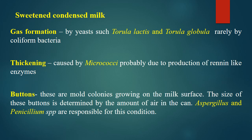Now we will see the spoilage of sweetened condensed milk. The first change that can happen here is gas formation by yeasts such as Torula lactis and Torula globula, and rarely by coliform bacteria. Another kind of change is thickening caused by Micrococci, probably due to production of renin-like enzymes, which can cause thickening or roughness. There can also be buttons — mold colonies growing on the milk surface — whose size is determined by the amount of air in the can. The common species responsible are Aspergillus and Penicillium.